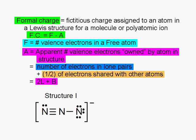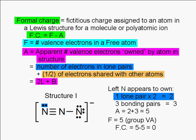Let's illustrate this for the nitrogen atom on the left in structure 1. This atom has one lone pair. It owns both electrons in the lone pair. 2L equals 2. This atom also has three bonding pairs. That's six electrons, but it owns only half of those. The other half belongs to the nitrogen atom in the middle. Half of 6 is 3. B equals 3. Therefore, the total number of electrons that the nitrogen atom on the left appears to own is 5. 2 plus 3 equals 5.